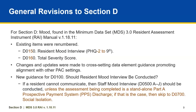Existing items are renumbered. The Resident Mood Interview is now numbered D0150, and the Total Severity Score is now identified as D0160. Changes and updates were made to cross-setting data element guidance, promoting alignment with other PAC settings. There is new guidance for D0160 should Resident Mood Interview be conducted.